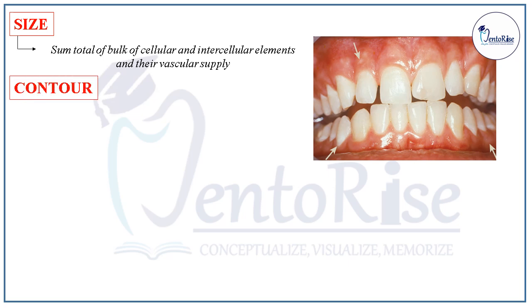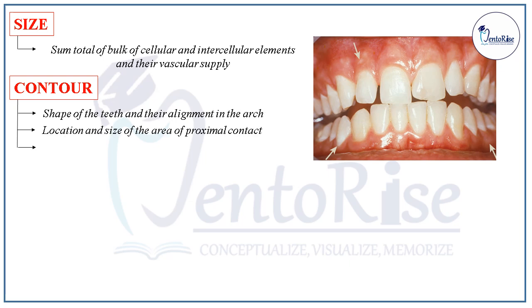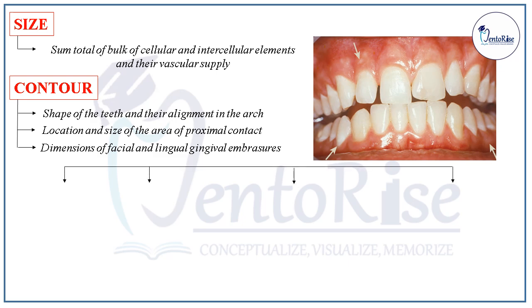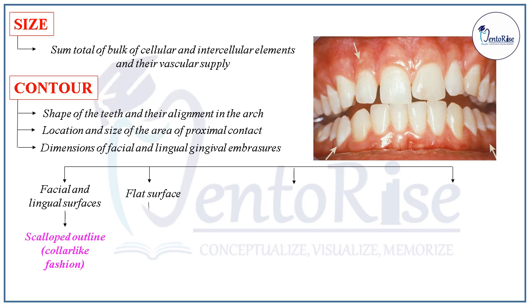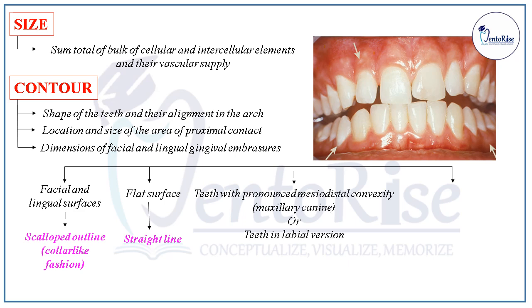If we talk about the contour of gingiva, then it is dependent upon various factors. The first factor is the shape of the teeth and their alignment in the arch. The second factor is the location as well as the size of area of proximal contact. The third factor is the dimensions of facial and lingual gingival embrasures. On the facial and lingual surfaces, the gingiva has a scalloped outline — that means the gingiva is present in a collar-like fashion. On the flat surfaces of the teeth, the gingiva is present in a straight line. In teeth with pronounced mesiodistal convexity, like in the case of maxillary canine or teeth which are in labial version, the gingiva has an accentuated arcuate contour. In teeth in lingual version, the gingiva is horizontal and thickened.